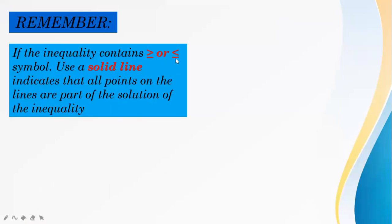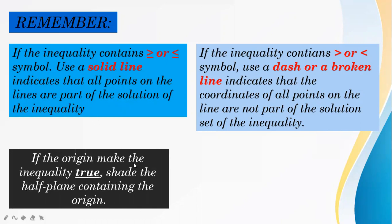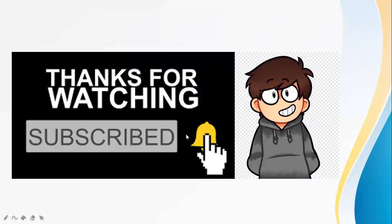Remember: if the inequality contains greater than or equal to, or less than or equal to symbol, use a solid line — all points on the line are part of the solution. If the inequality contains greater than or less than symbol, use a broken line — points on the line are not part of the solution set. If the origin makes the inequality true, shade the half plane containing the origin; if false, shade the half plane that does not contain the origin. Thanks for watching. Bye!